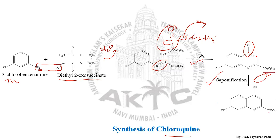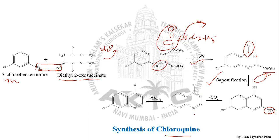That same ester (CO₂C₂H₅) structure will undergo saponification. The ester is converted into an acid, and once the acid is formed, it undergoes decarboxylation — removal of CO₂ — giving us the simple 4-hydroxyquinoline.